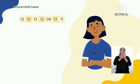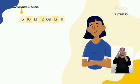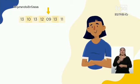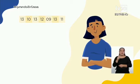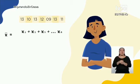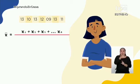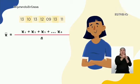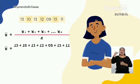¿Qué te parece si vemos un primer ejemplo? Se tienen las edades de 7 estudiantes que asisten a una reunión: 13, 10, 13, 12, 9, 13 y 11 años. Tenemos que hallar la edad media. Entonces, ¿cómo hacemos? Simplemente vamos a sumar todos los datos y el resultado lo dividimos entre el total de datos. En la parte superior sumamos todas las edades.